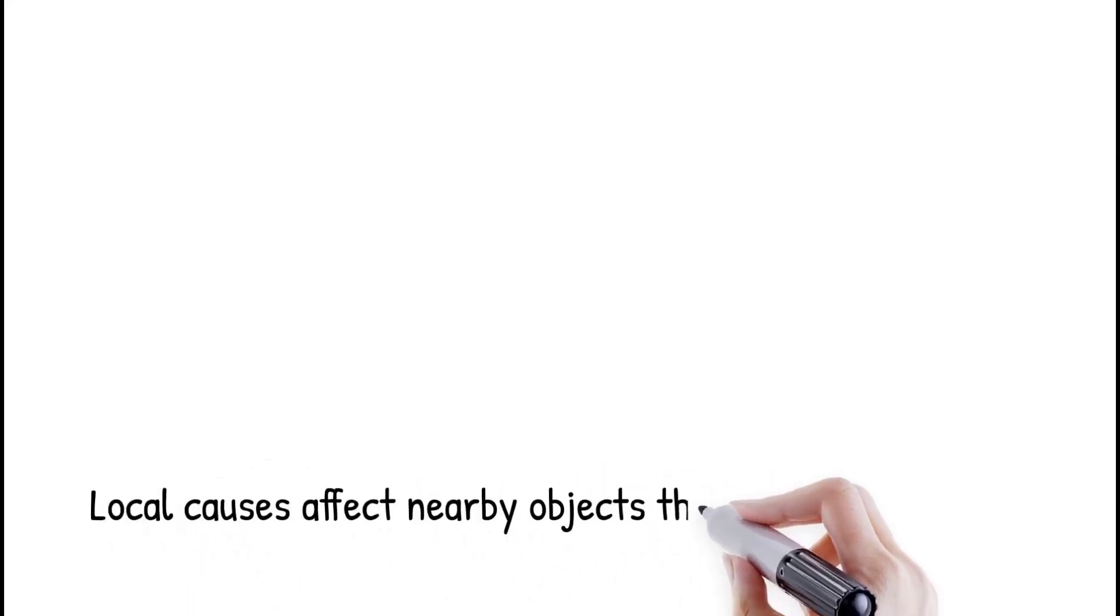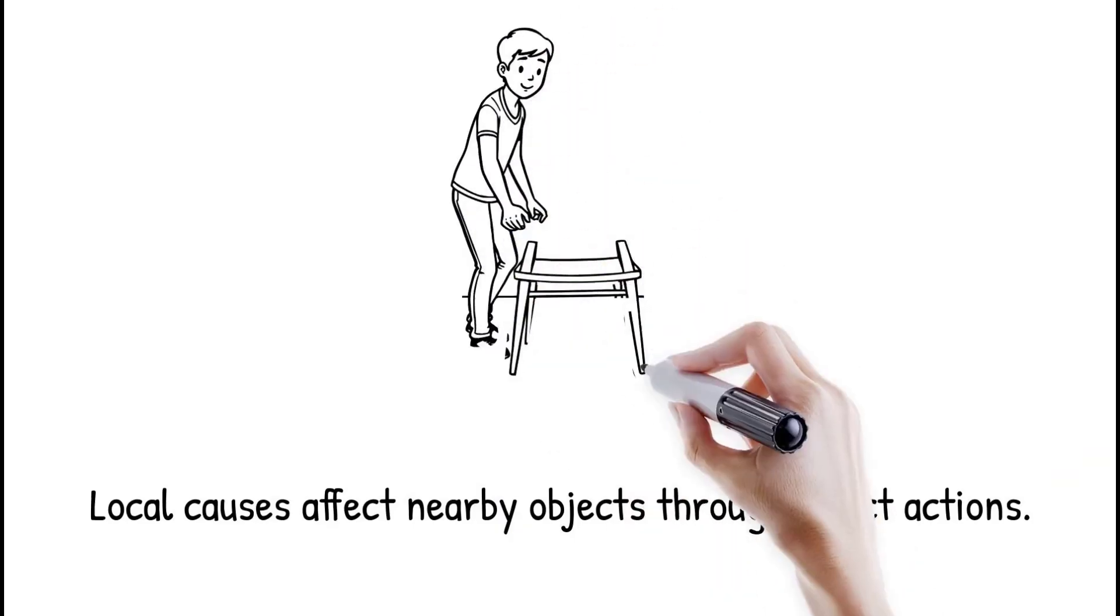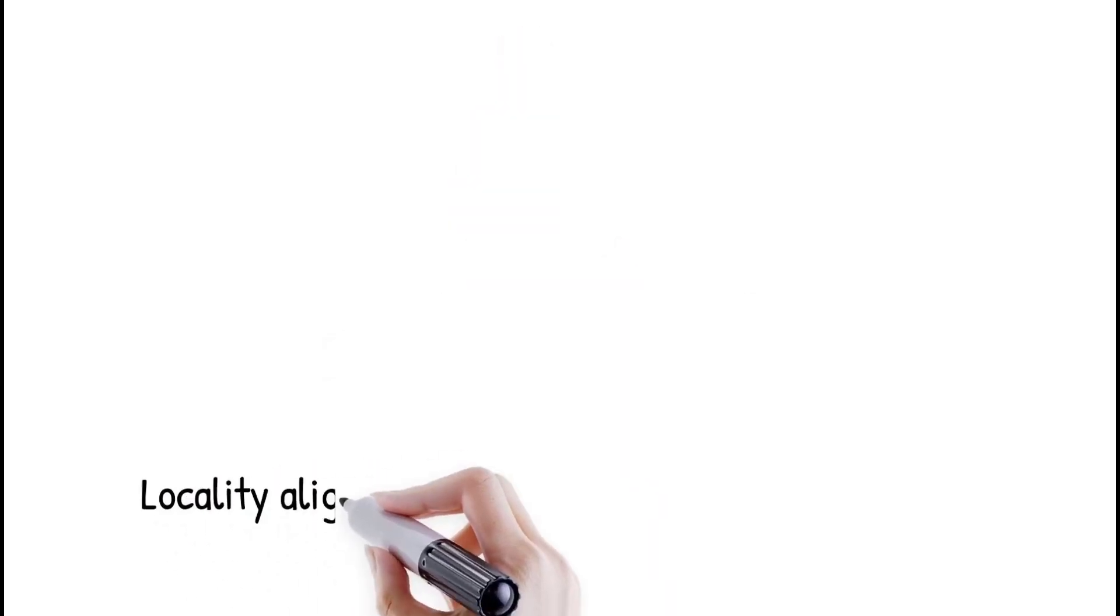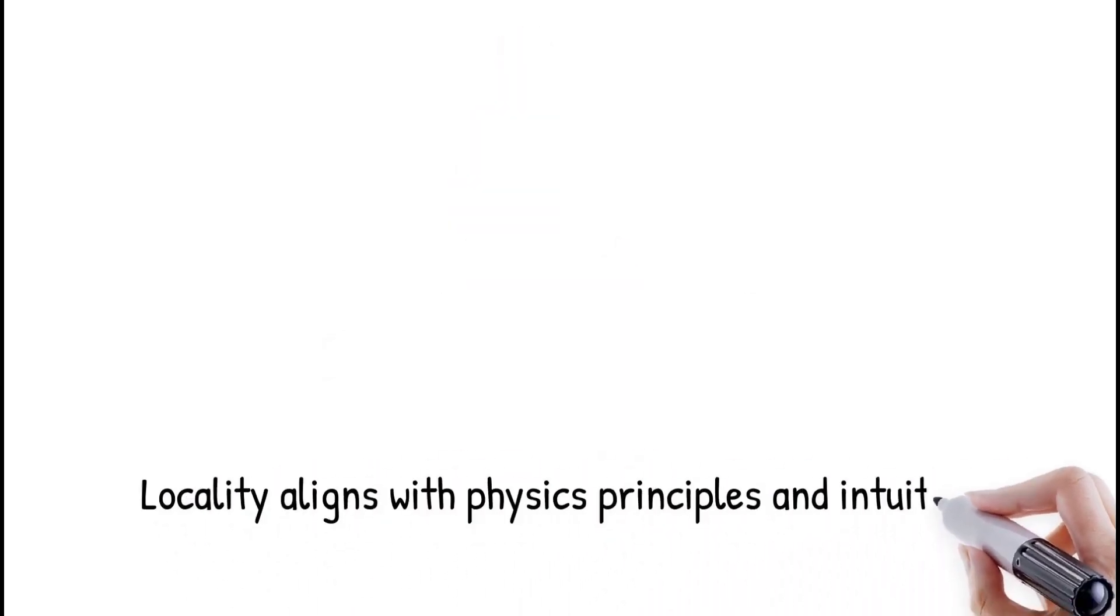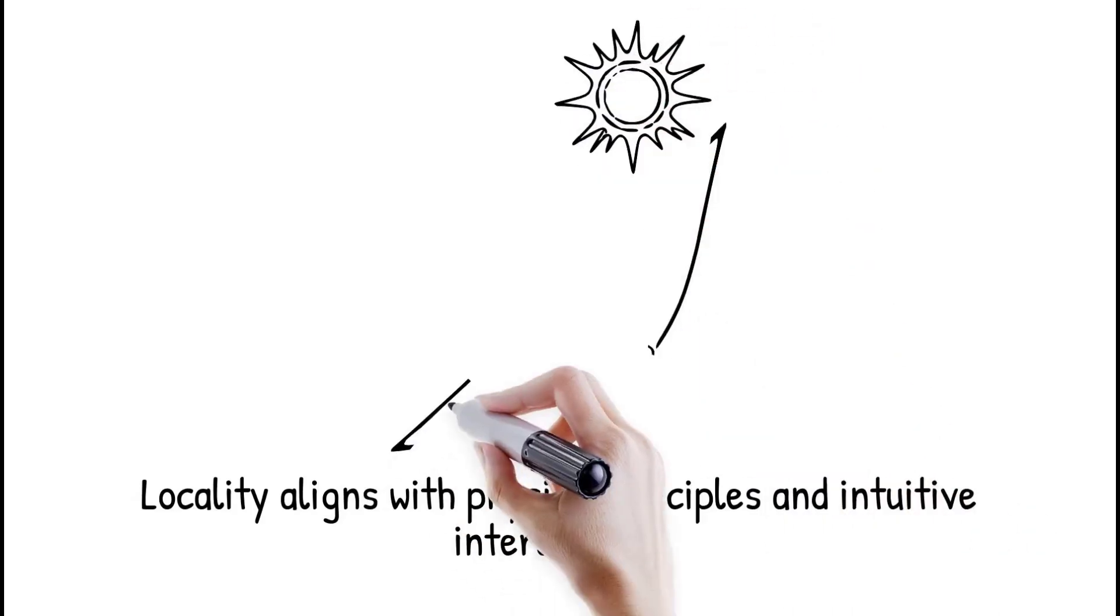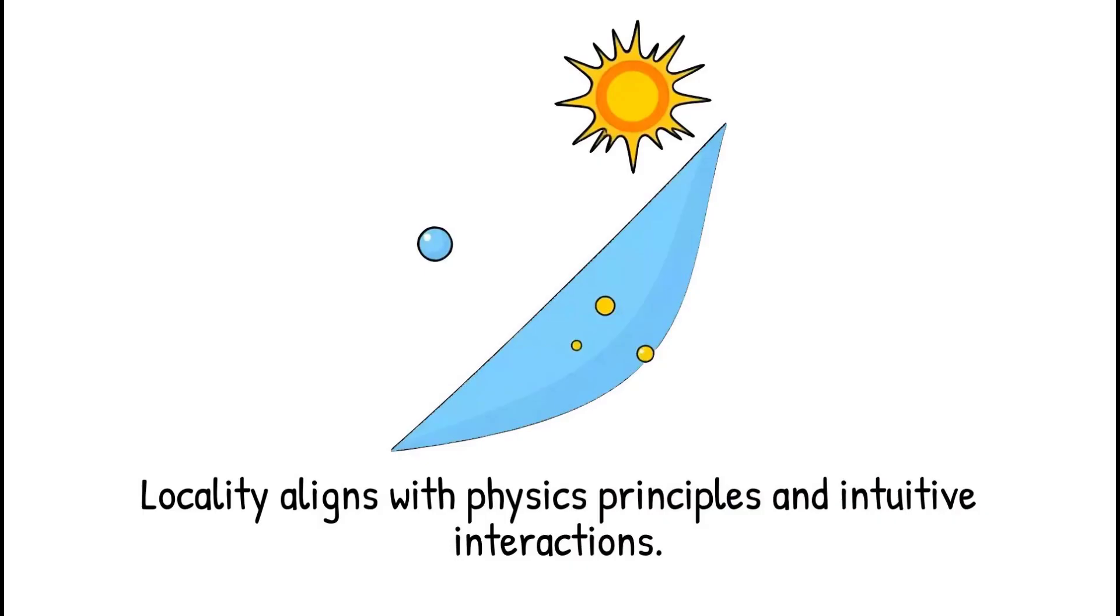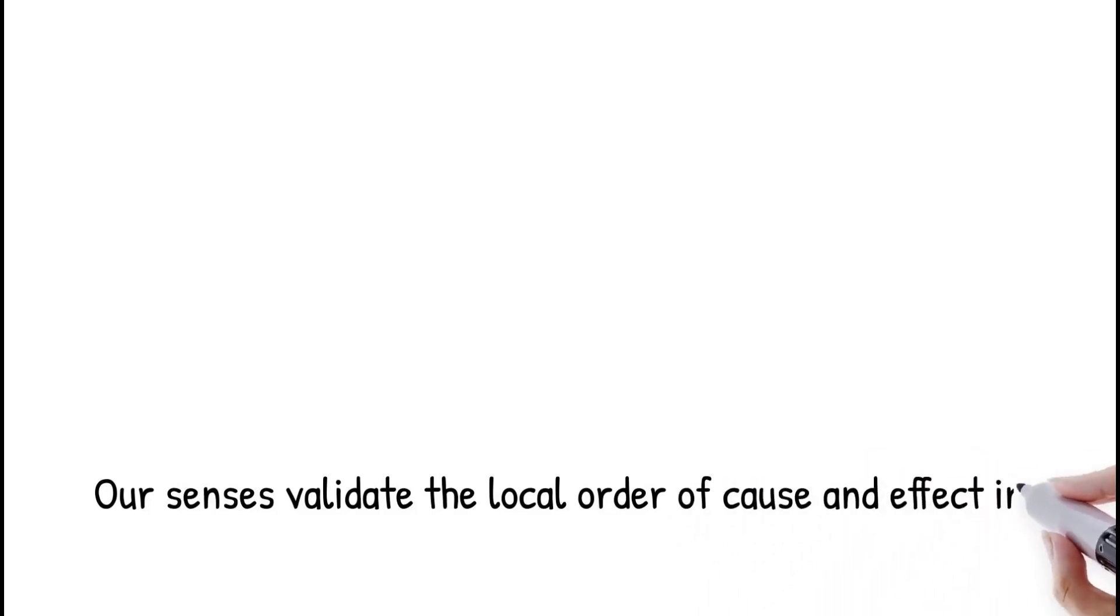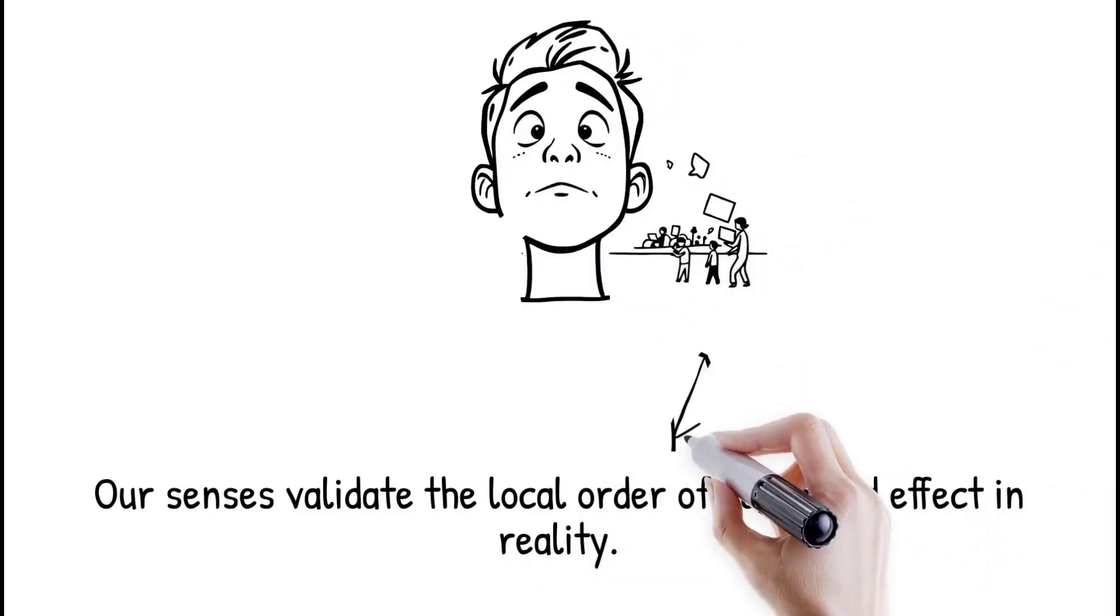In daily life, causes and effects are local. Actions influence nearby objects through direct contact or signals traveling at finite speed. Push a chair and it moves, drop a stone and it falls. Physics at this scale is consistent with the principle that nothing travels faster than light. Locality feels intuitive because interactions involve forces like friction, gravity, and electromagnetism, acting across visible or measurable distances. Our senses confirm this order of cause and effect. Locality seems to be the bedrock of reality as we experience it.